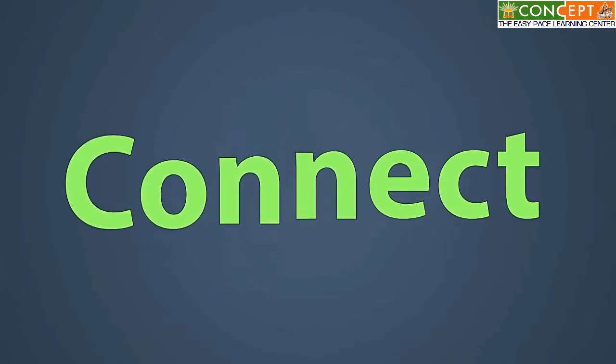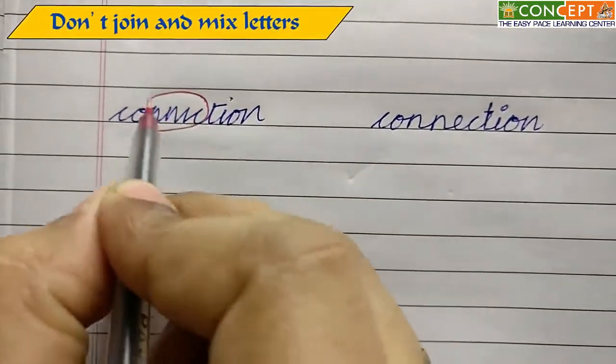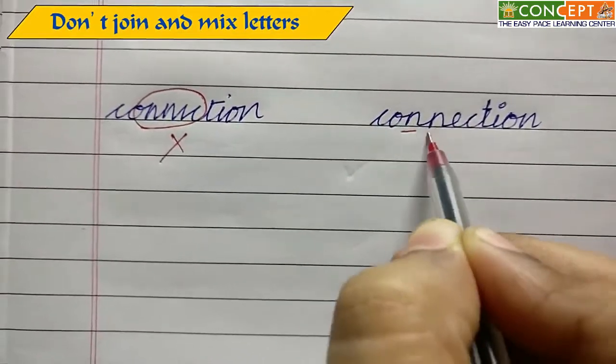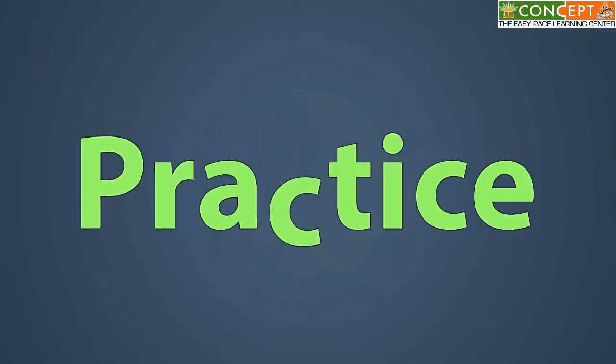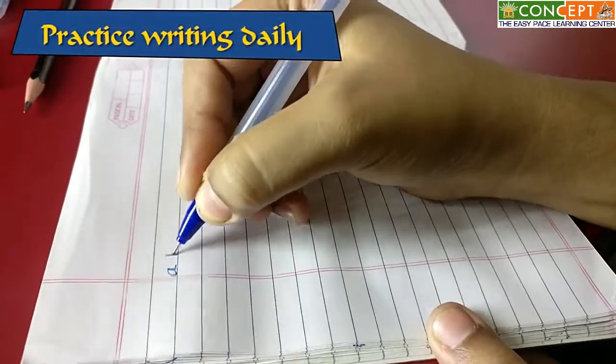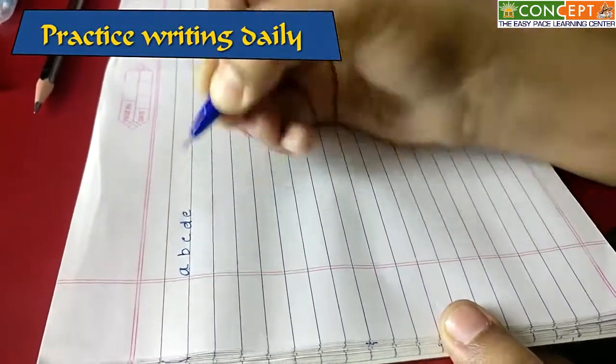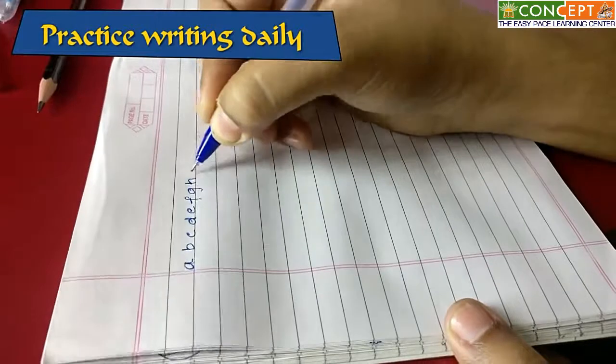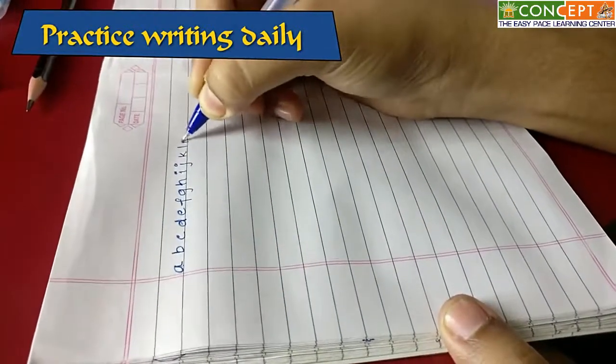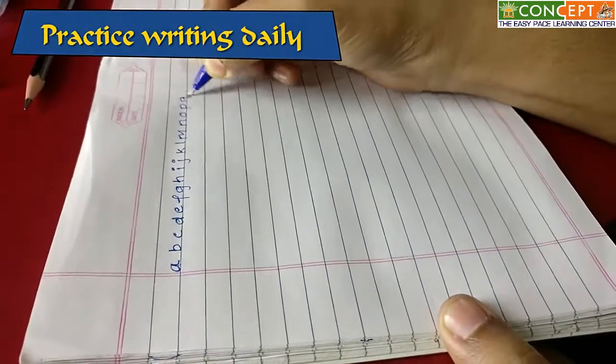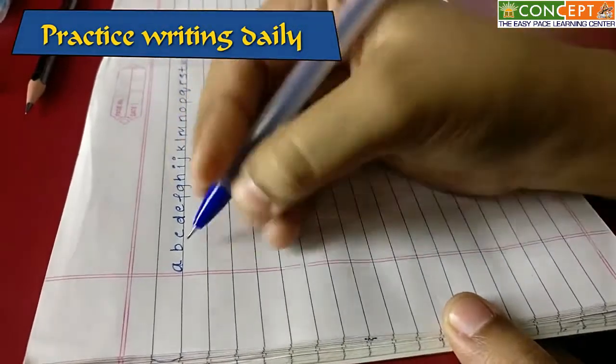Also while writing, stop joining letters. Write each letter very clearly. Again, to implement all these, you will have to practice writing daily. Initially, while practicing, try writing slowly and implement the required changes. And then when you get a hang of it, you can increase the speed.